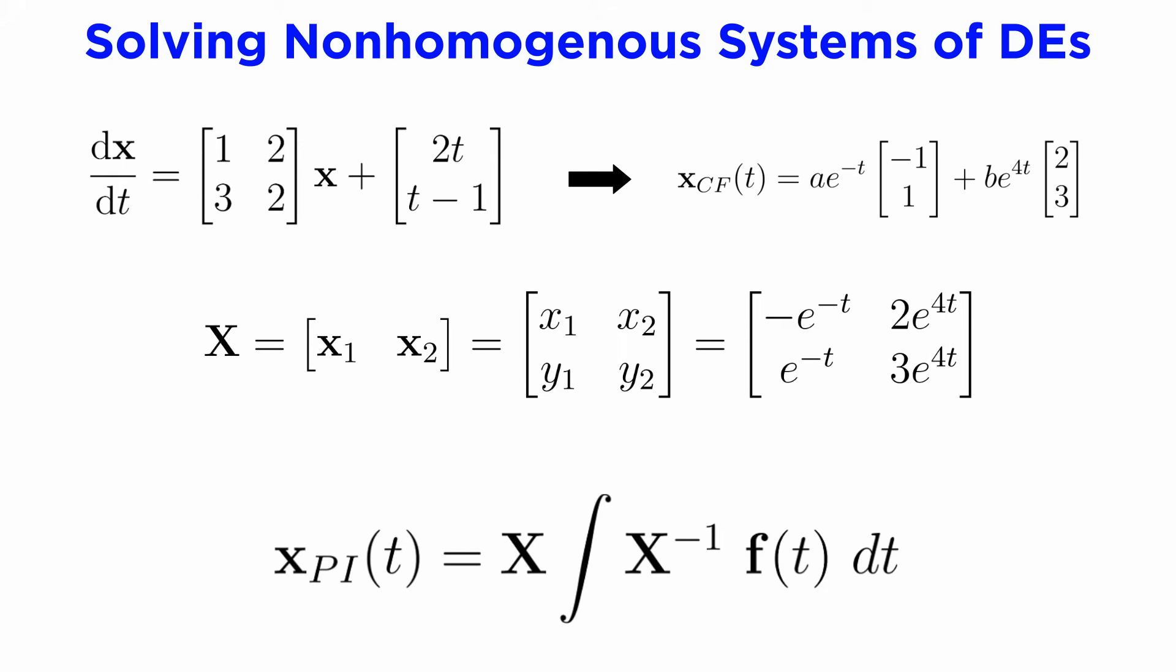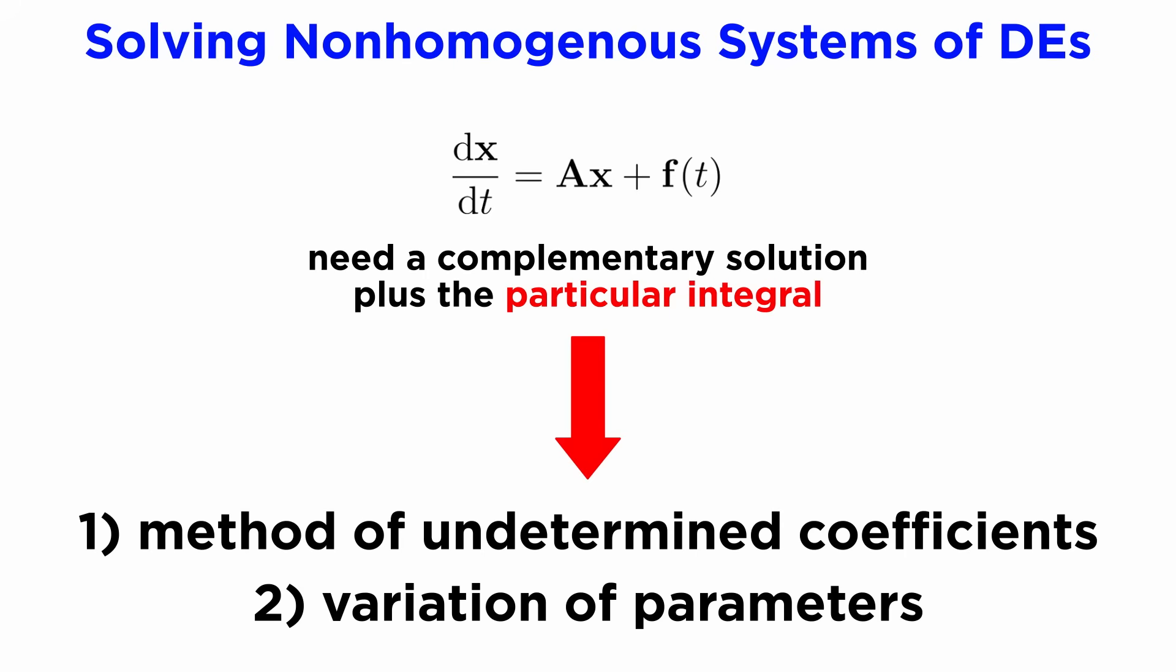But that doesn't mean it will be any less work, since it requires inverting matrices and taking multiple integrals. Either way, both of these methods allow us to solve non-homogeneous linear systems where the substitution method learned in the last tutorial might not have been possible at all, and they also extend to higher order systems too.